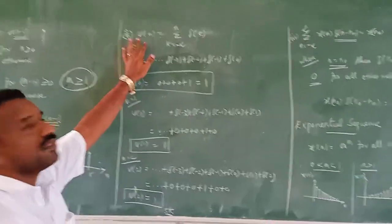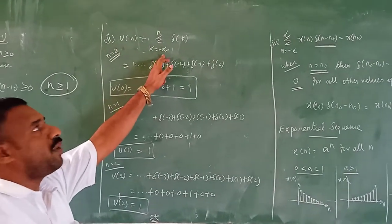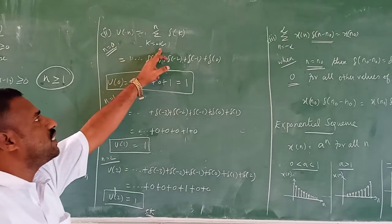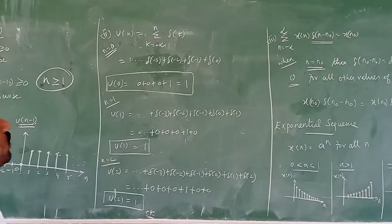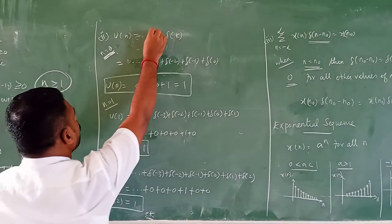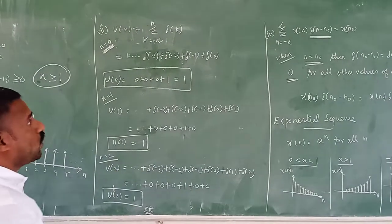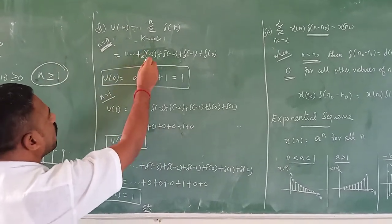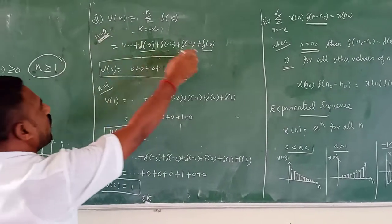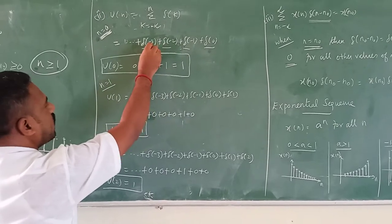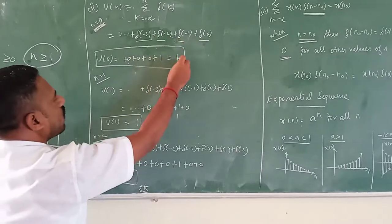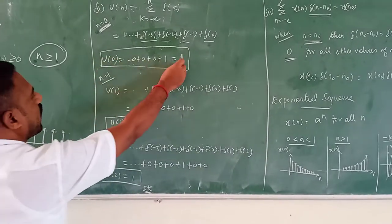The second property is: u of n equals summation from k equals minus infinity to n of del of k. That is, the unit step sequence equals the sum from k equals minus infinity to n of del of k. To verify, select n equal to 0: summing del of minus 3 plus del of minus 2 plus del of minus 1 plus del of 0 gives 0 plus 0 plus 0 plus 1, so u of 0 equals 1.